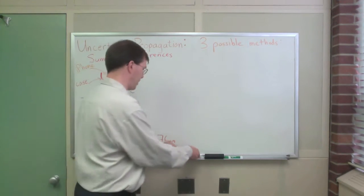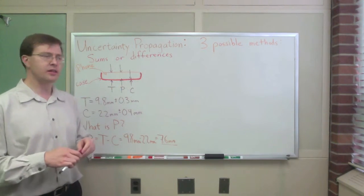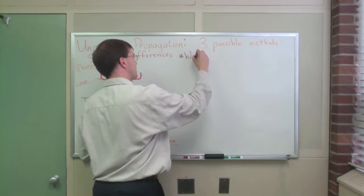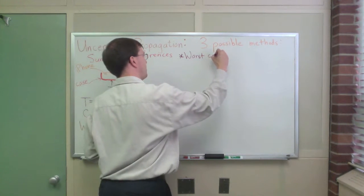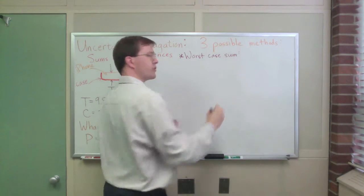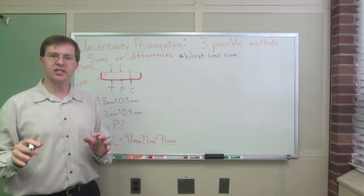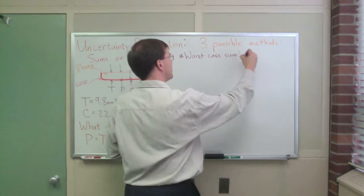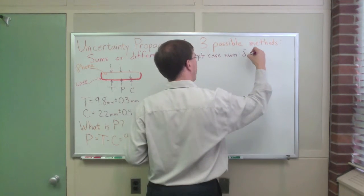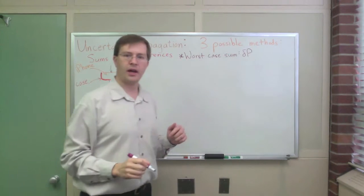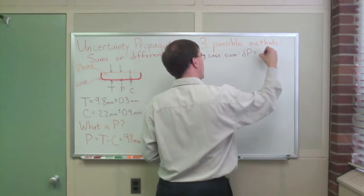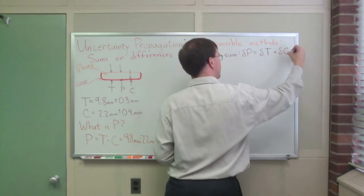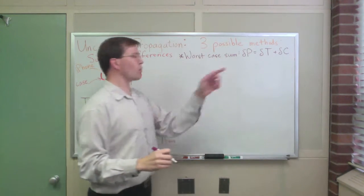I'm going to tell you about three different ways you can do that from least useful to most useful. And let me summarize those here. So the three possible methods, the first of those I might call the worst case sum of uncertainties. This is the assumption where we just say the uncertainty in my phone thickness is equal to the uncertainty in the total thickness plus the uncertainty in the case thickness.